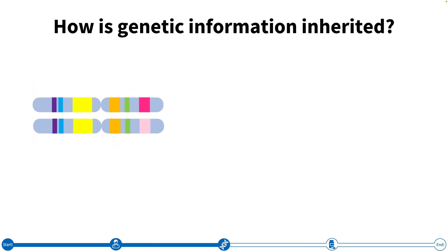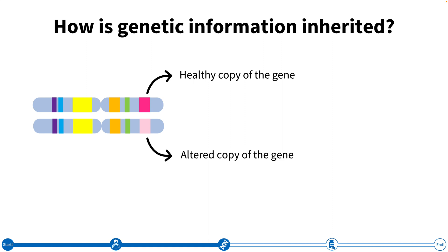Take, for example, this pink gene. You can see that one copy is dark pink — this is the healthy version of the gene. The light pink version has a change in it. Sometimes changes in one copy of a gene are enough to cause disease, while other times both copies need to be affected. But how do we know how many copies are needed to cause disease? The answer is that we need to know the inheritance pattern.